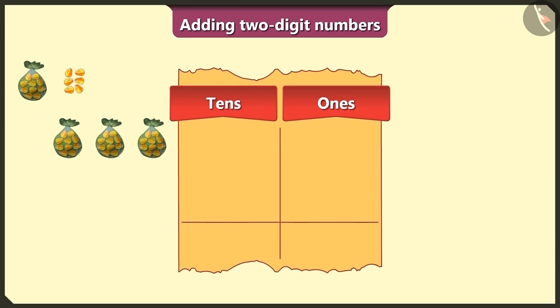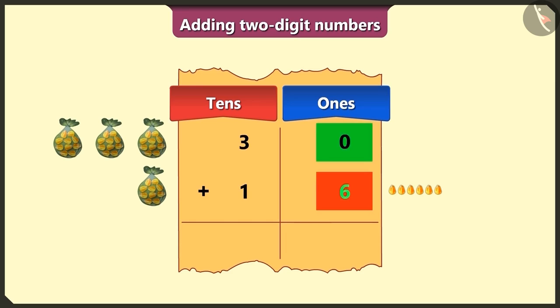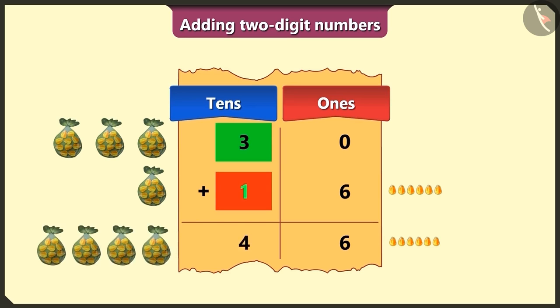To write number 30, we will write 3 in the tens box and 0 in the ones box. To add 16 to 30, write 1 in the tens box and 6 in the ones box. Now, first in the ones box, we will add the numbers 0 and 6, that will give us 6. Now in the tens box, we will add the numbers 3 and 1, the total of which will be 4. So how many total number of grains are here now?